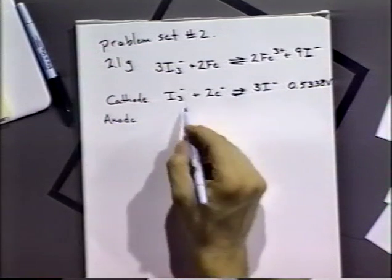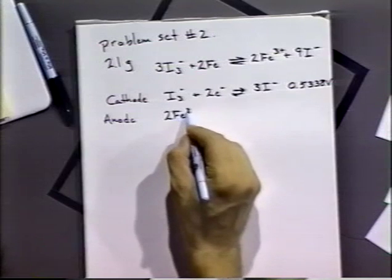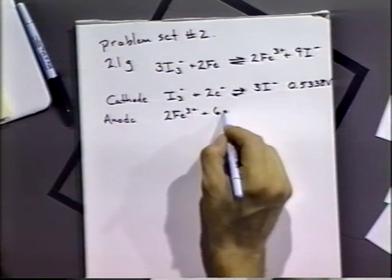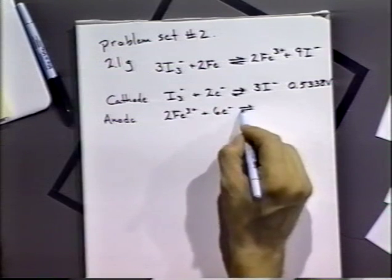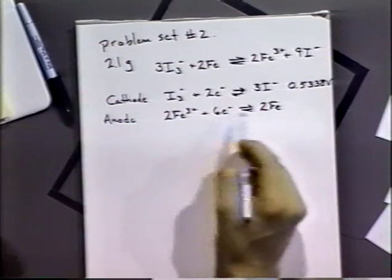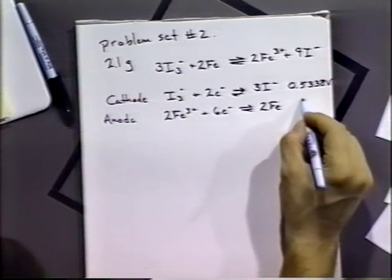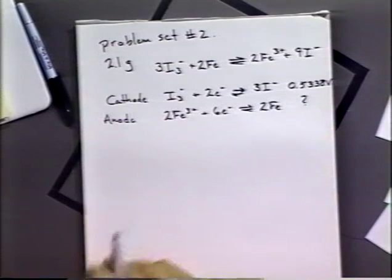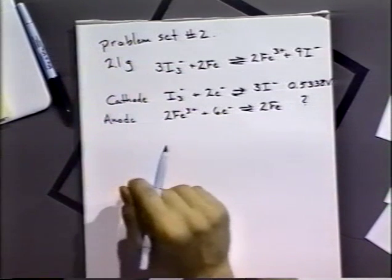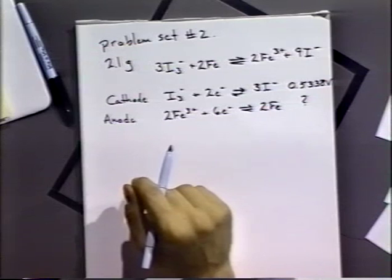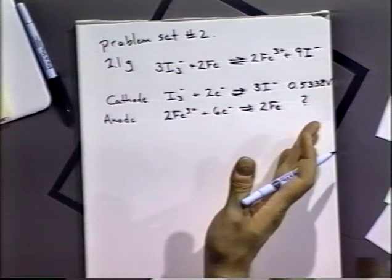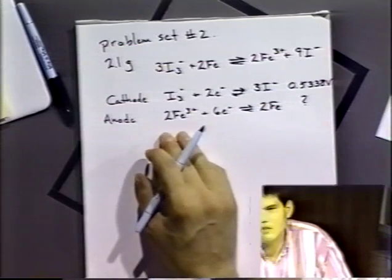At the anode, the reaction would have to be two iron three plus plus six electrons going to two irons. Actually, we could have just one, three, one. But if you look in the back of the book, you see there's actually no listed value for that. Now, you can do what the mod did and look up in the library and find one. Or you can actually solve this because we can combine half reactions to do that.